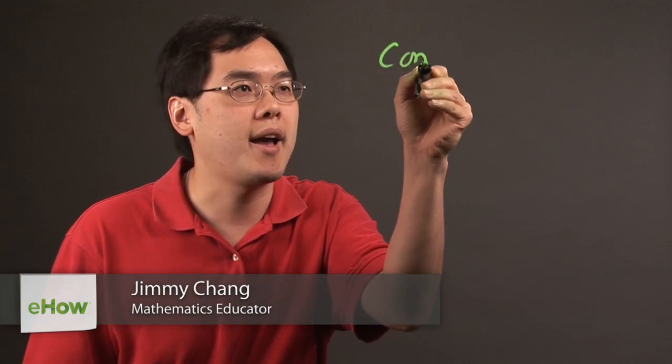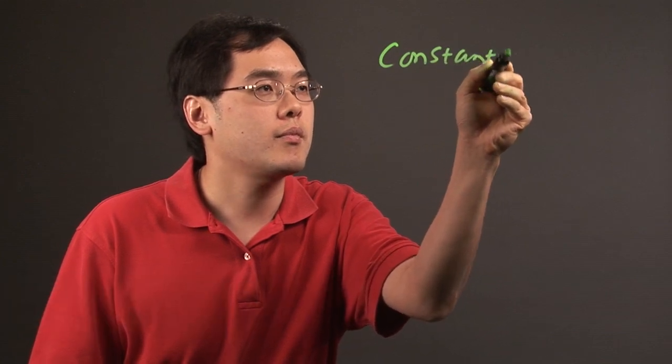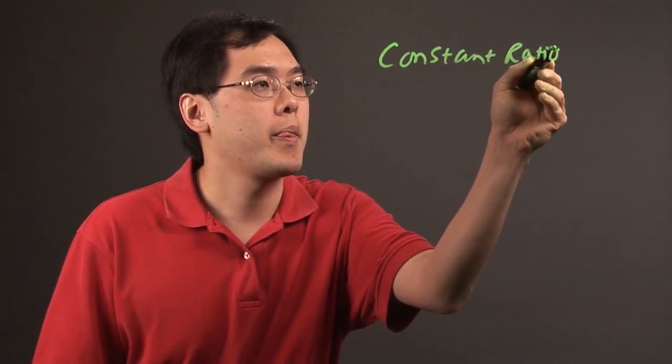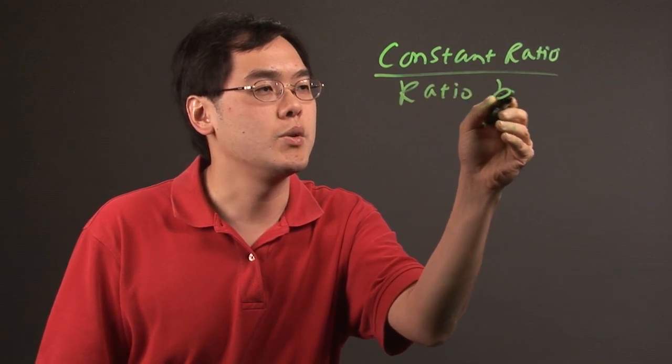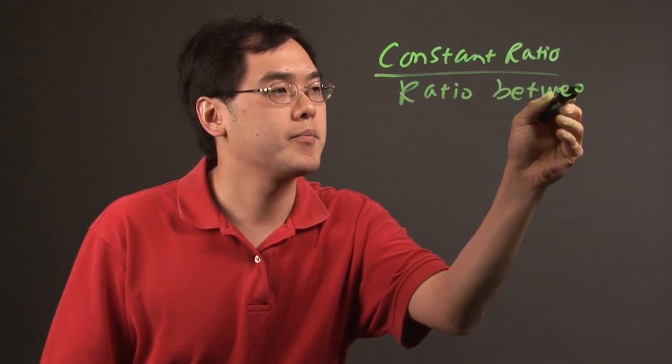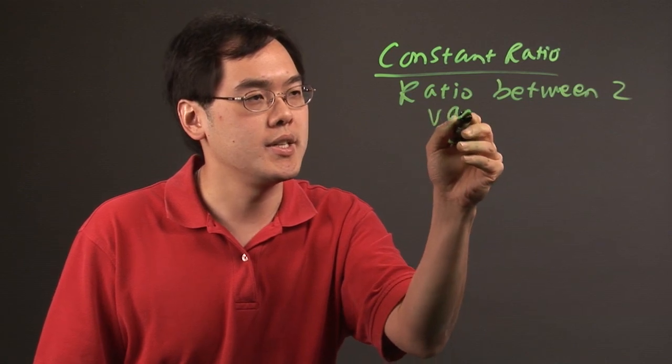Hi, I'm Jimmy Chang, and we're here to talk about the definition of constant ratios in mathematics. Constant ratios in math basically means that the ratio between two variables is constant.